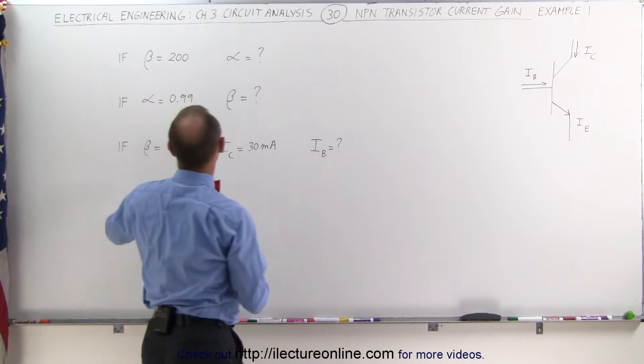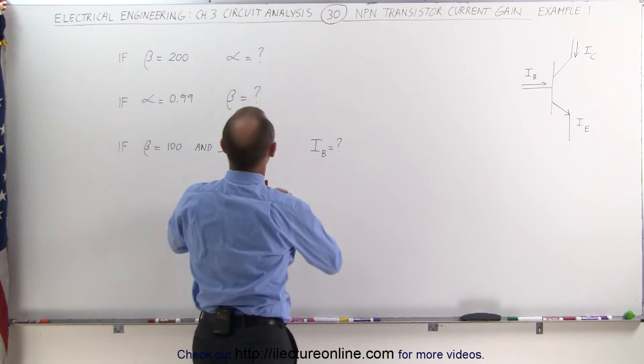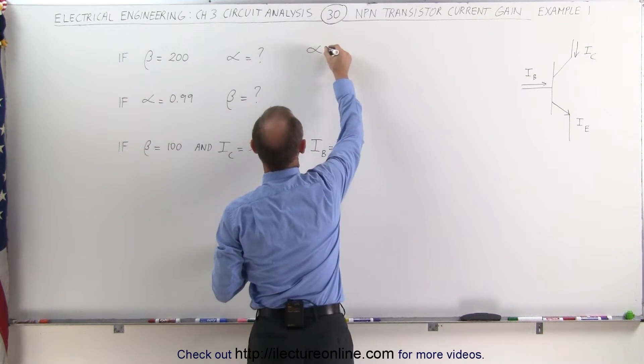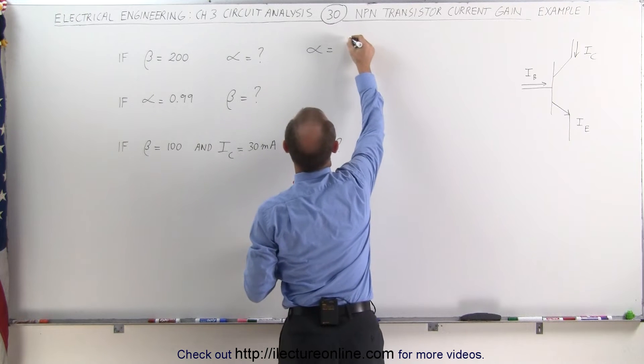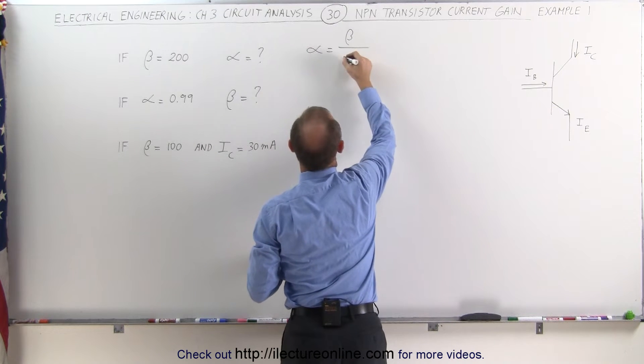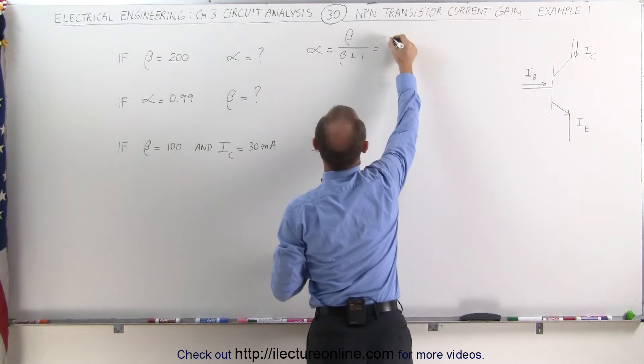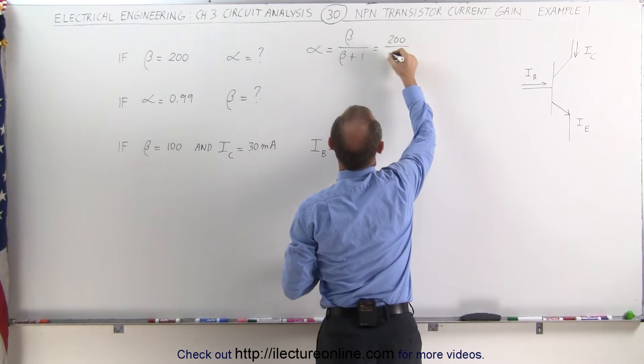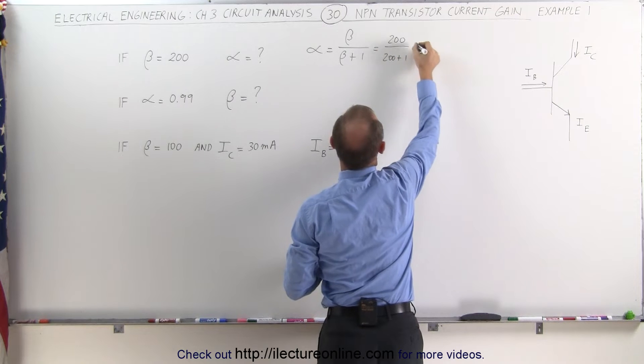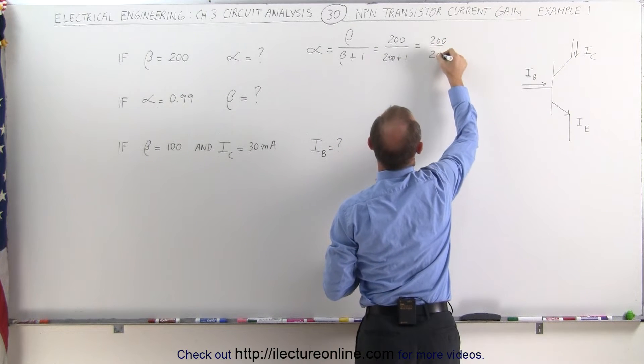So we need to know the equations, the relationship between beta and alpha. We know that alpha is equal to beta divided by beta plus 1. So this is equal to 200 divided by 200 plus 1, which is equal to 200 divided by 201.